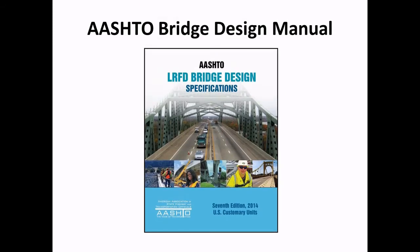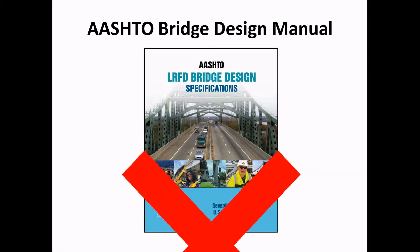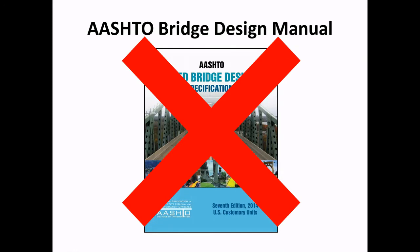The AASHTO Bridge Design Manual — you can buy it online in loose-leaf format, but it's super expensive and consists of enough pages to fill three three-ring binders. Due to its price and unwieldy size, most people opt not to bring it. If you can borrow a copy from work and you know how to use it, go ahead. Otherwise, don't bother. I guessed on all the AASHTO Bridge Design questions and I still passed.